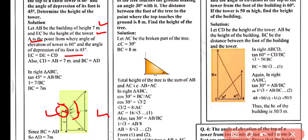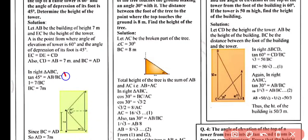The angle of depression of the foot of the tower from point A is 45°. Now EC equals ED plus DC. Also, CD equals AB equals 7 meters, and BC equals AD. In triangle ABC, using the trigonometric ratio: tan45° equals AB/BC, which gives 1 = 7/BC, so BC = 7 meters, and therefore AD = 7 meters.